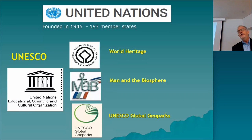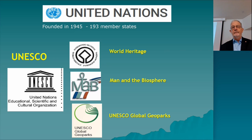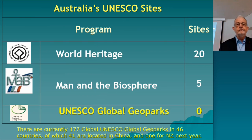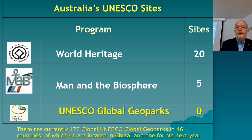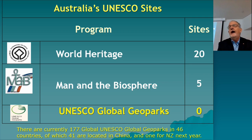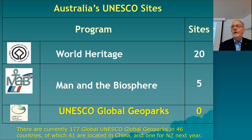In terms of United Nations programs, there are three areas of activity: World Heritage Areas, Man in the Biosphere, and UNESCO Global Geoparks — all representing different ways people relate to the environment across natural and cultural heritage. In Australia we have 20 World Heritage Areas — familiar ones include the Barrier Reef, Blue Mountains, Daintree, Lamington National Park. We have five Man in the Biosphere areas, the last declared last June, and zero UNESCO Global Geoparks. This causes some concern because there are 177 UNESCO Global Geoparks in 46 countries, 41 of which are in China, with New Zealand gaining one next year.